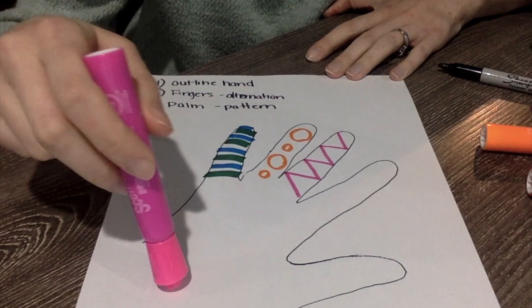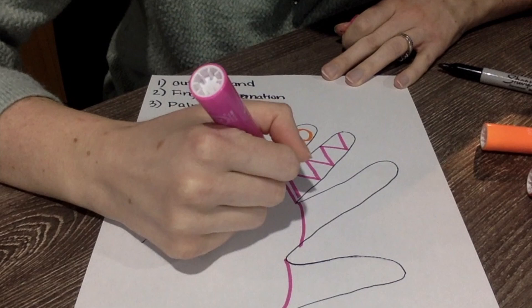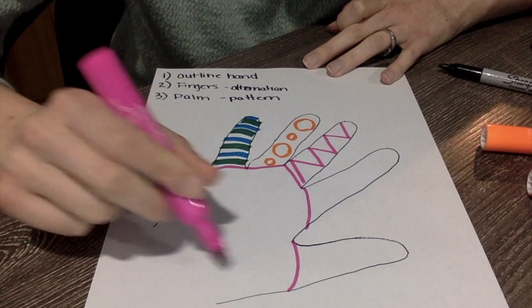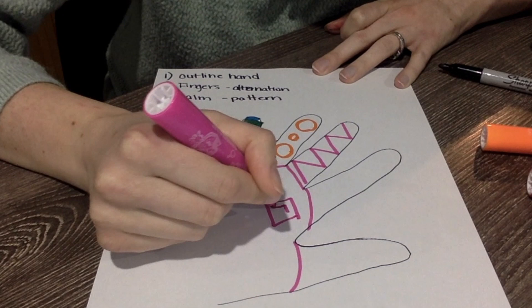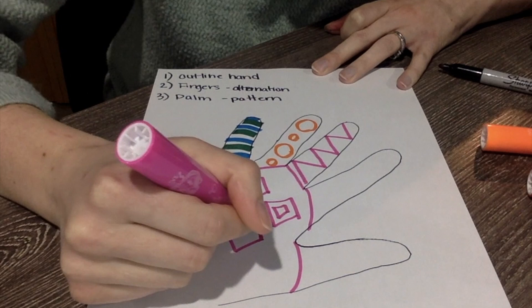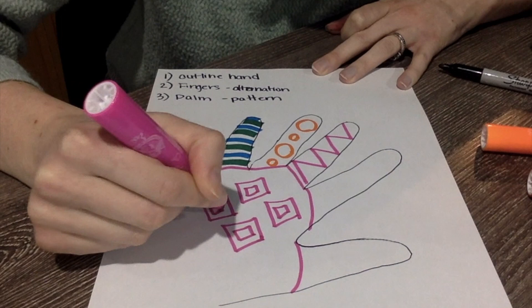So you can just cap those off wherever your pattern stops. Down here I want you to create your own design, so whether it be some squares and just kind of go like that, make your own pattern. So on the palm it's just a pattern, you don't have to alternate anything, you can have them go all different directions.